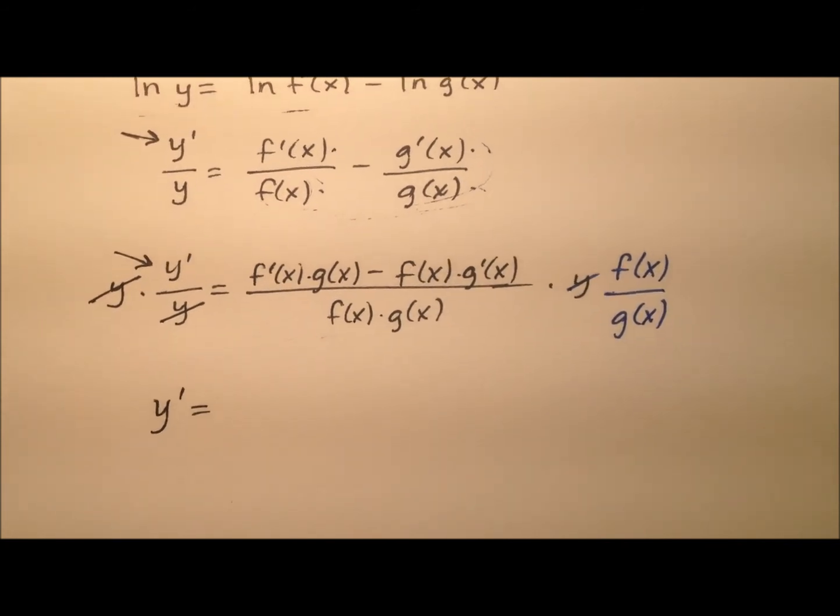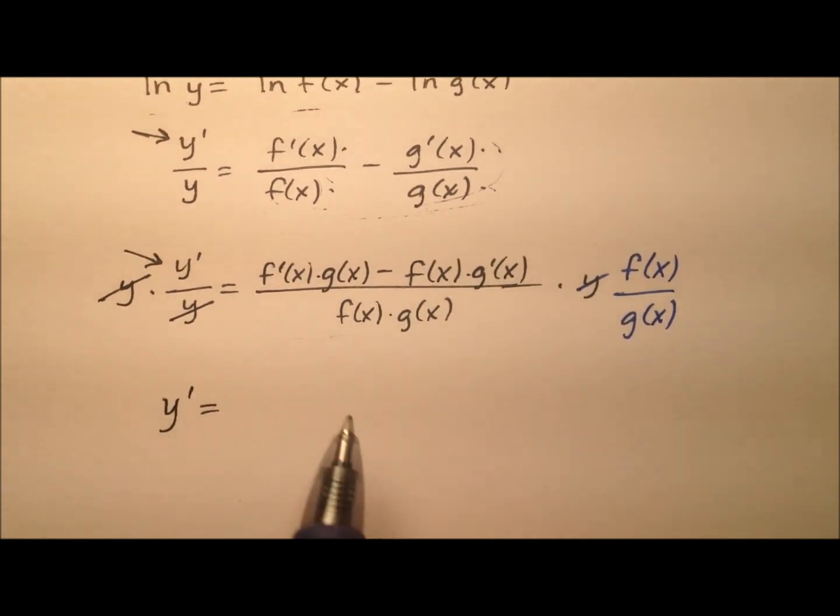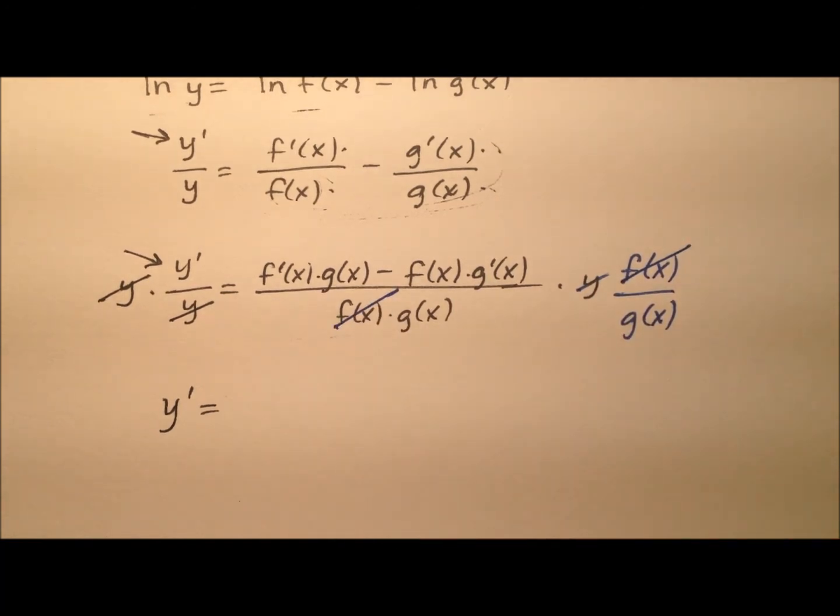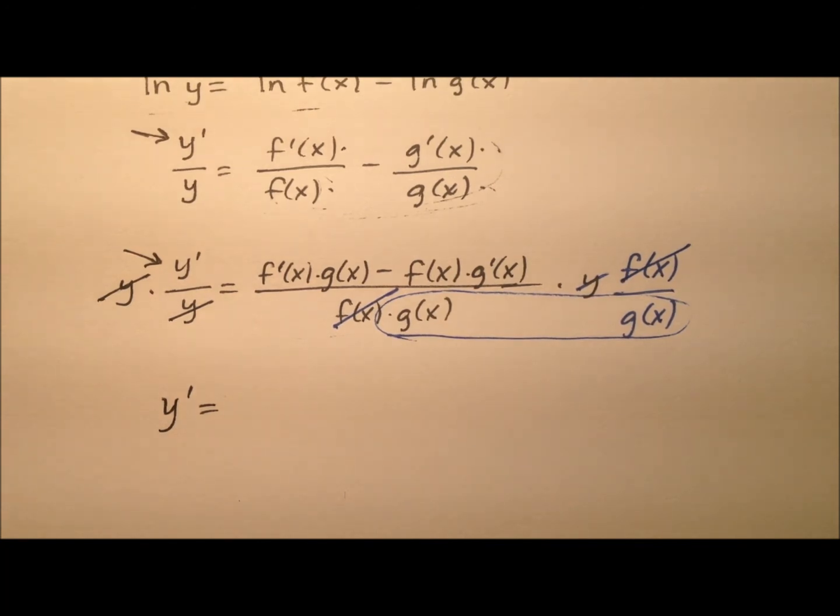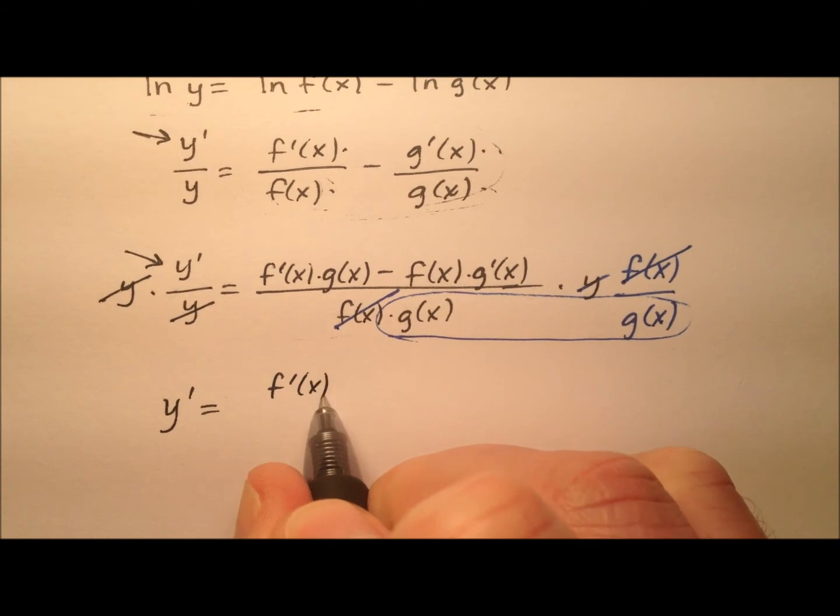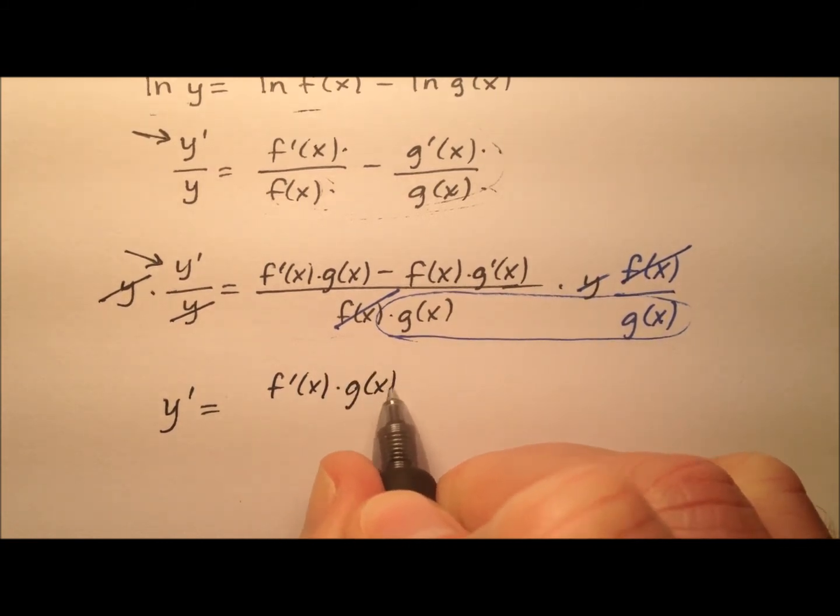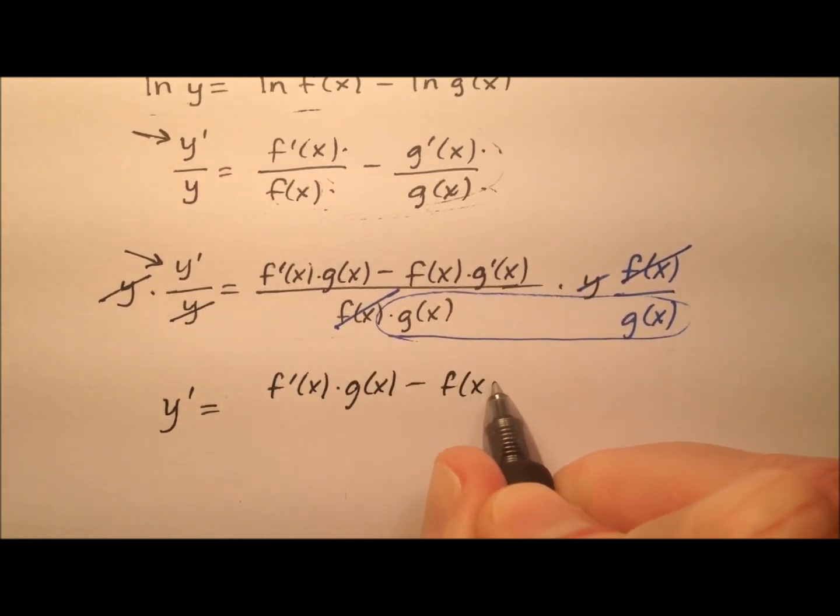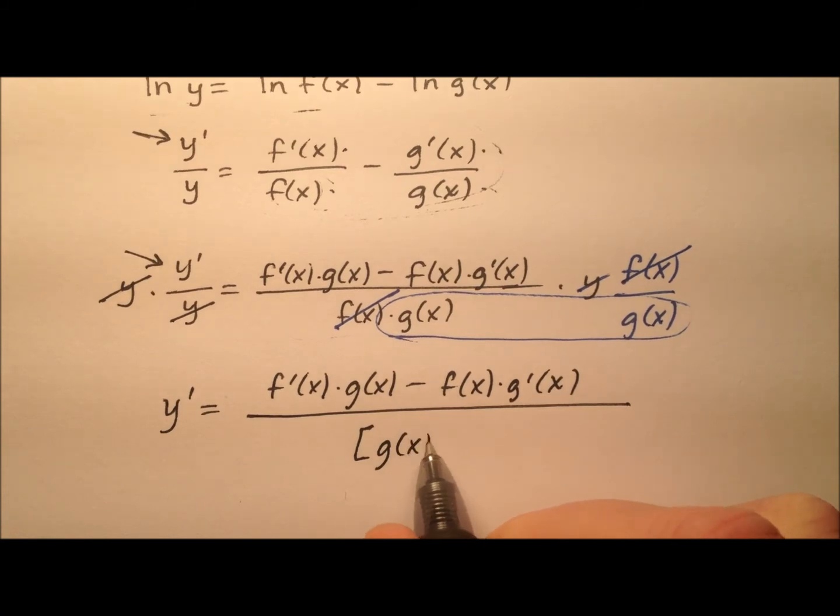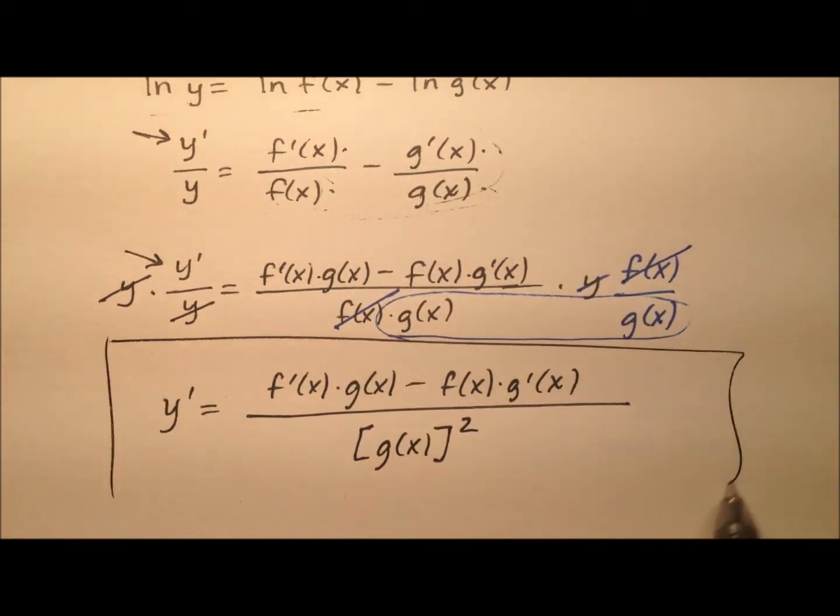So what's going to happen now, and maybe you're already seeing how this is going to come out. So the f of x here and here will cancel, and I'll multiply these g of x's together. So what I'm going to have is f prime of x times g of x minus f of x times g prime of x all over,